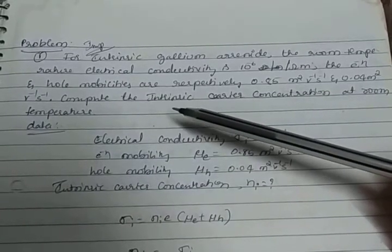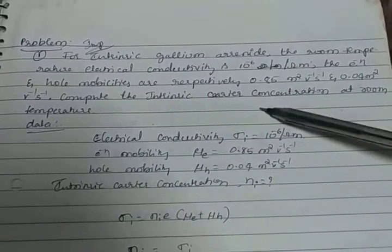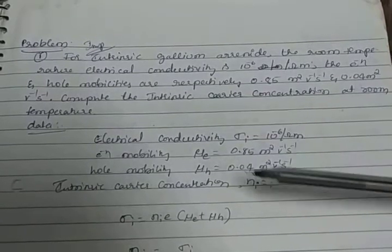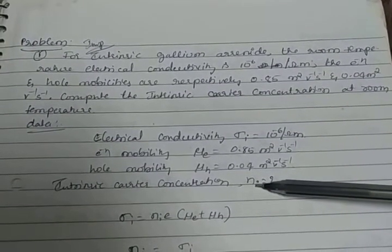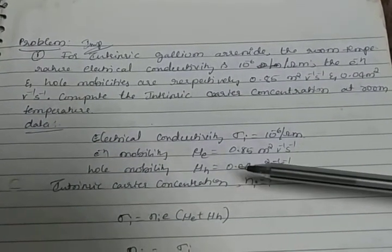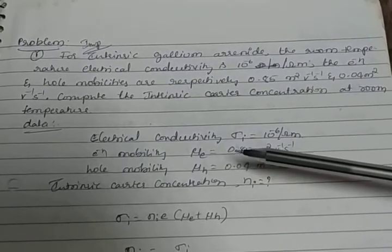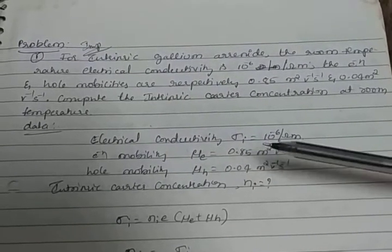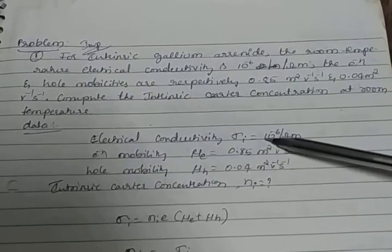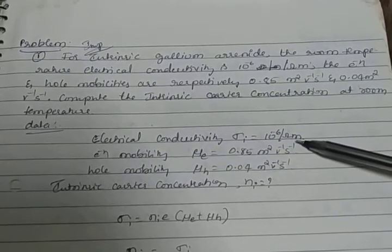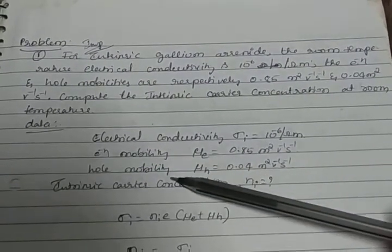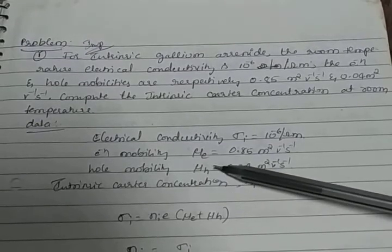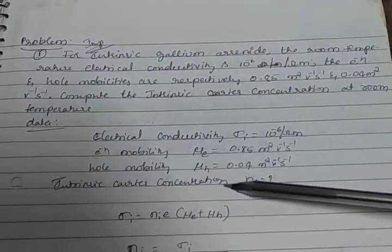Here, calculating intrinsic carrier concentration that is represented by Ni. What are the given values? Electrical conductivity sigma_i is 10^-6 per ohm meter, and electron mobility mu_e and hole mobility mu_h, both are given.